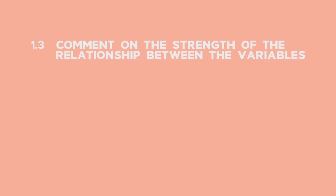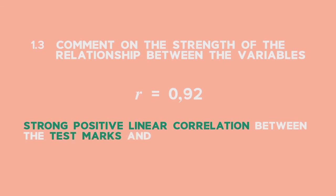For 1.3, looking at the value of R, which is close to positive 1, we can say that there is a strong positive linear correlation between the test marks and the number of Saturday classes attended.